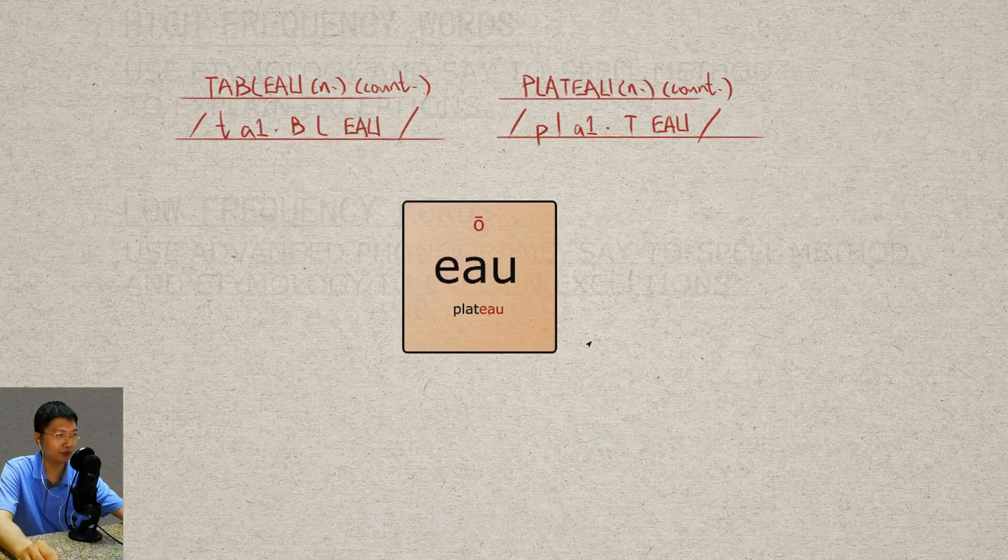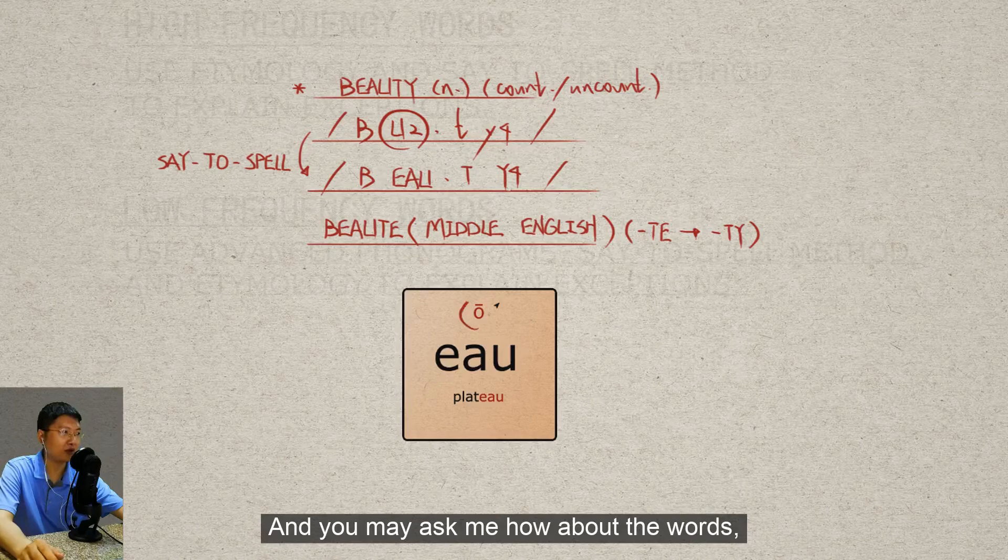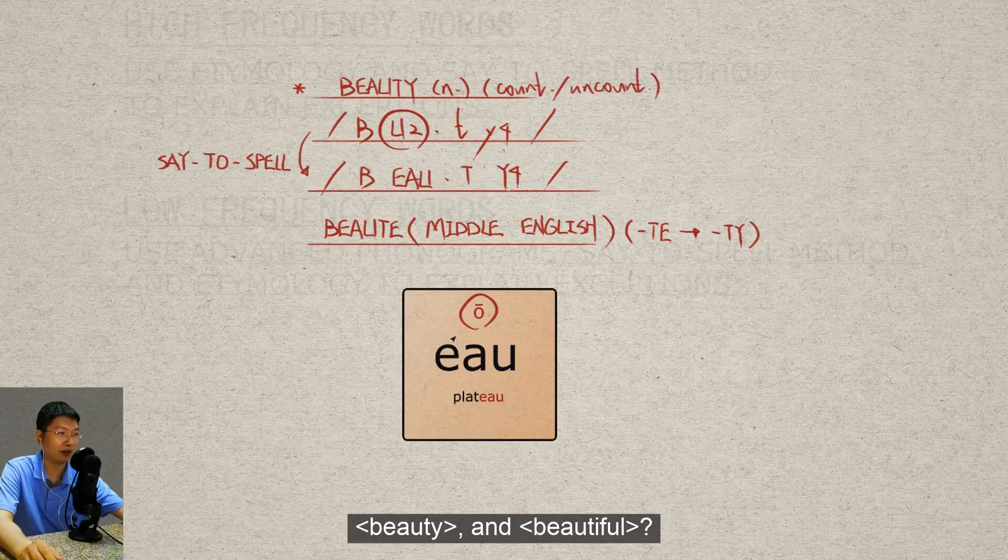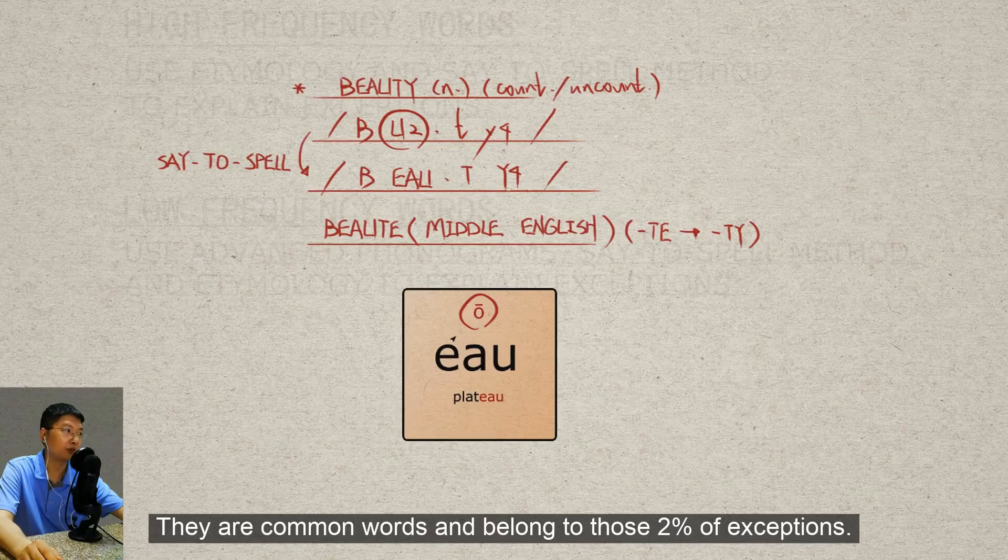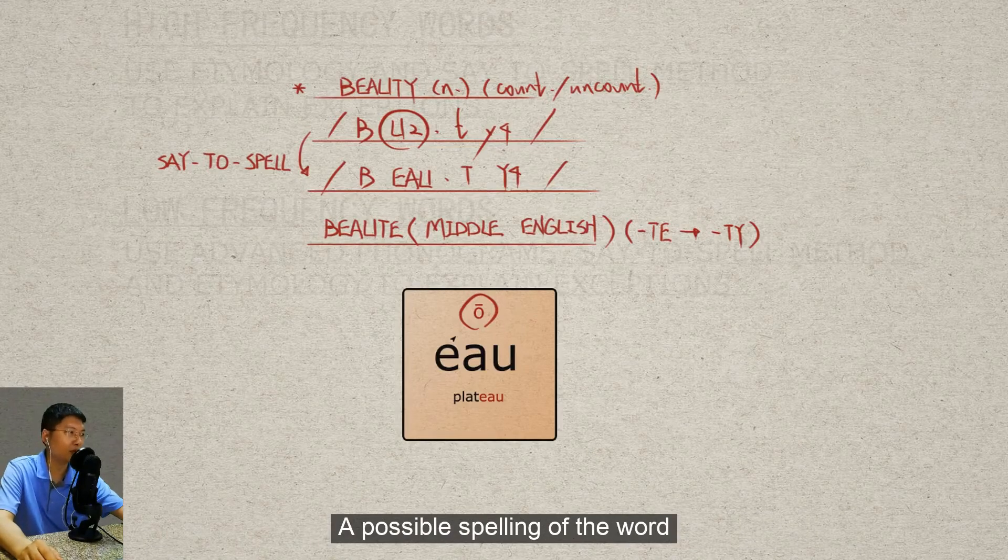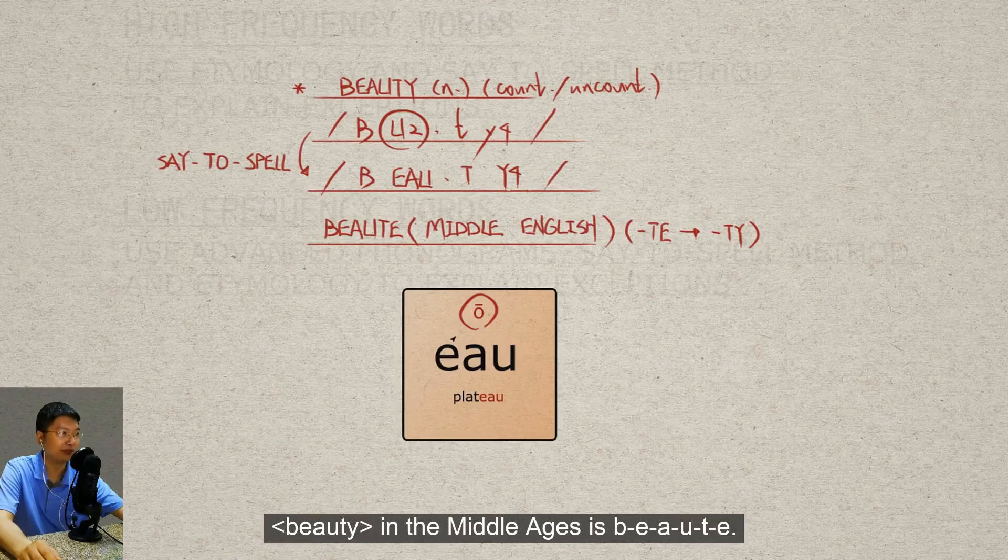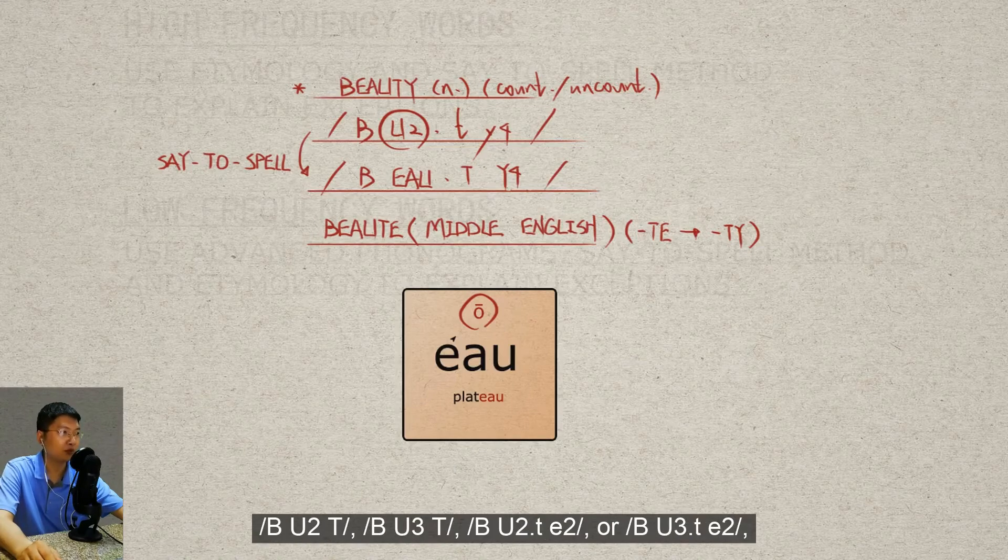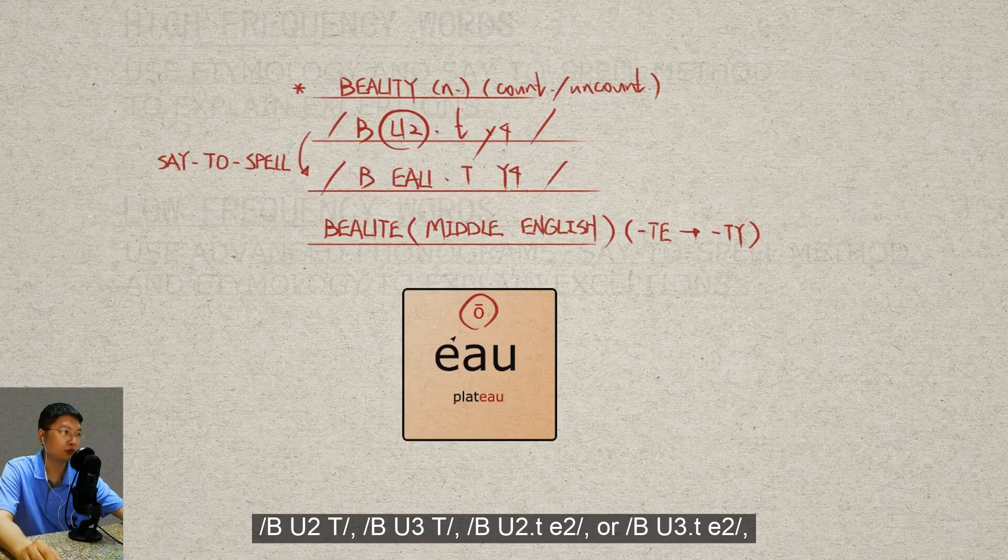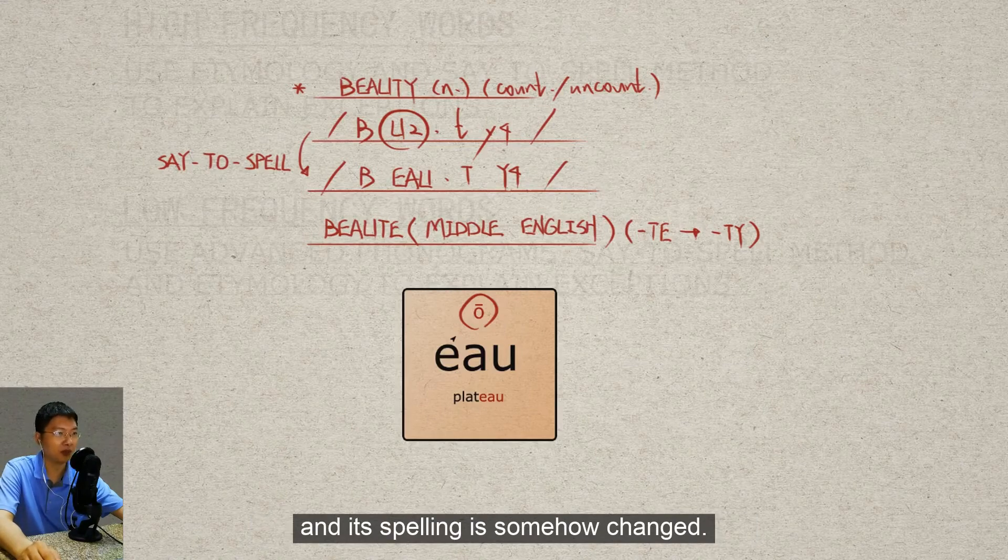And you may ask me, how about the words 'beauty' and 'beautiful'? They are common words and belong to those 2% of exceptions. A possible spelling of the word 'beauty' in the Middle Ages is B-E-A-U-T-E. It could have been pronounced as 'beaut', 'boot', or 'booty'. And its spelling is somehow changed.